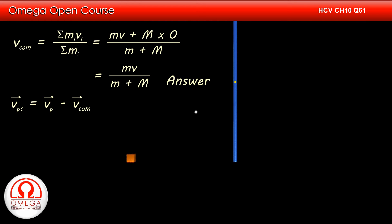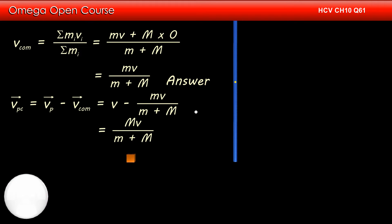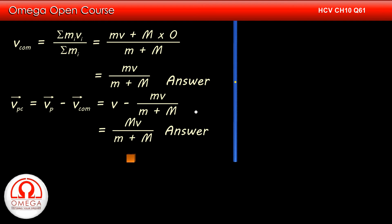Since the particle is moving with speed v, its speed with respect to the centre of mass is v minus mv/(m + M). Simplifying, we get Mv/(m + M). This is the answer to part B.